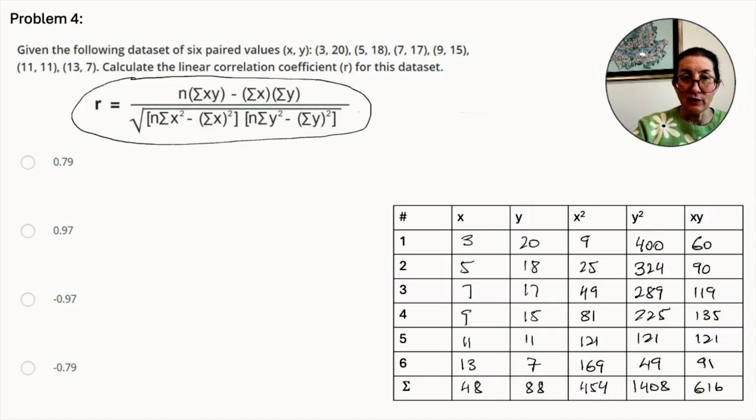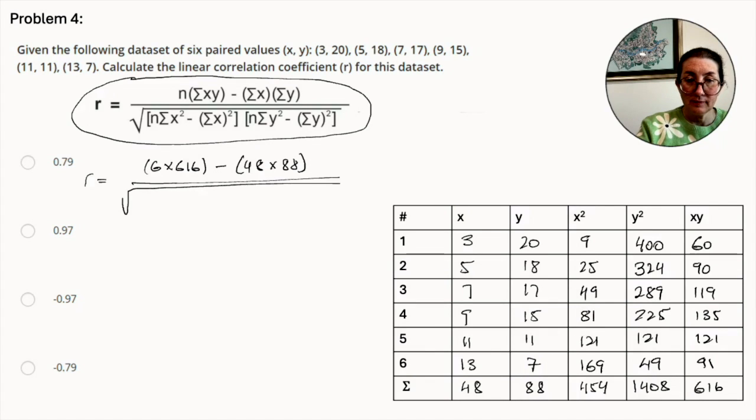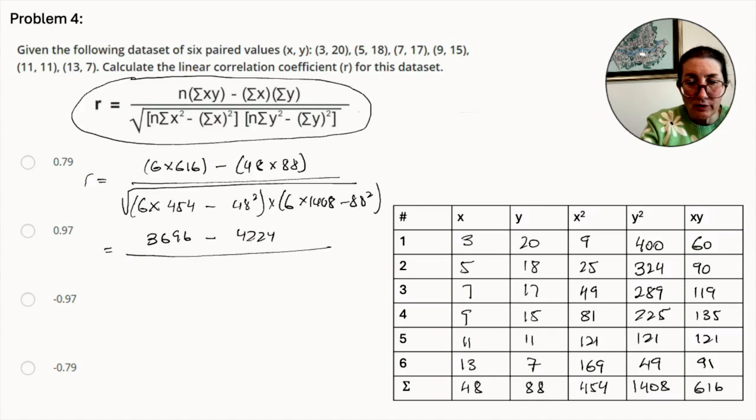Now we can plug these values into the formula from the table where n is the number of data points. And we use the summation of each column as follows. So we're plugging the values into the formula. So r equals 3696 minus 4224 over the square root of 2,724 minus 2,304 times 8,448 minus 7,744.